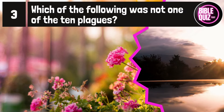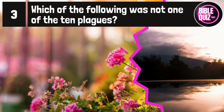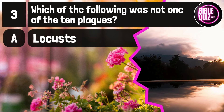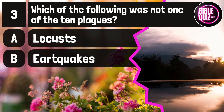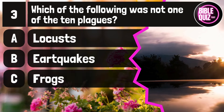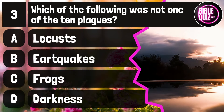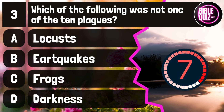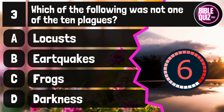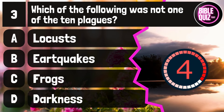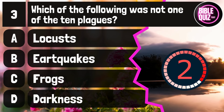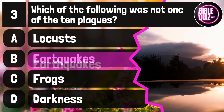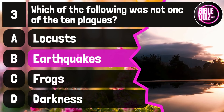Question number 3. Which of the following was not one of the 10 plagues? Option A: Locusts. Option B: Earthquakes. Option C: Frogs. Option D: Darkness. Time to think. The answer is option B: Earthquakes.